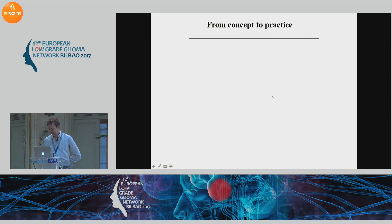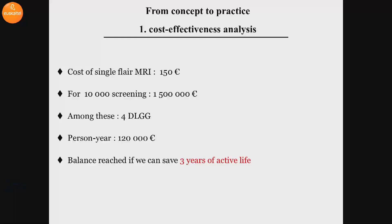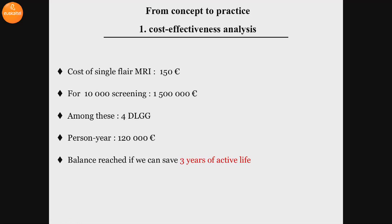Now, from concept to practice. The first question is cost-effectiveness. A single FLAIR MRI is about 150 euros. If you are doing 10,000 screenings, you have 1,500,000 euros, and among these people you will find four diffuse low-grade glioma cases. The cost per person here is 120,000 euros. So you reach balance if, by early detection and early treatment, you can save three years of active life. This sounds reasonable because the hope is that if we detect the glioma very early, maybe we can even cure the glioma.